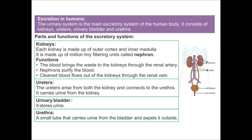Each kidney is made up of the outer cortex and inner medulla, and is made up of millions of tiny filtering units called nephrons. Blood brings waste to the kidney through the renal artery. Nephrons purify the blood, and clean blood flows out through the renal vein. Ureters arise from both kidneys and connect to the urinary bladder, which stores the urine. The urethra is a small tube that carries urine from the bladder and expels it outside the body.